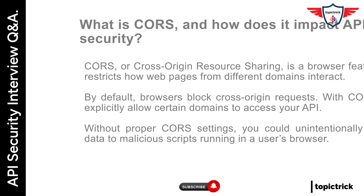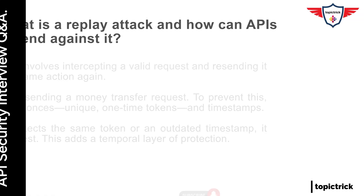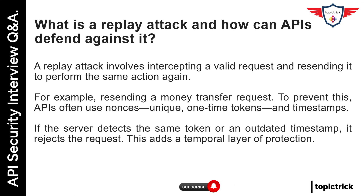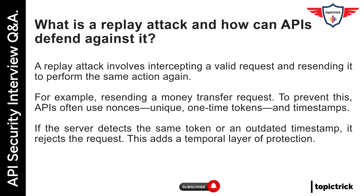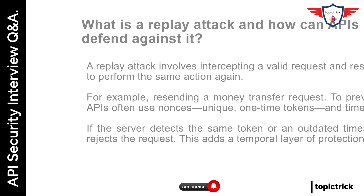What is a replay attack, and how can APIs defend against it? A replay attack involves intercepting a valid request and resending it to perform the same action again — for example, resending a money transfer request. To prevent this, APIs often use nonces: unique, one-time tokens, and timestamps. If the server detects the same token or an outdated timestamp, it rejects the request. This adds a temporal layer of protection.